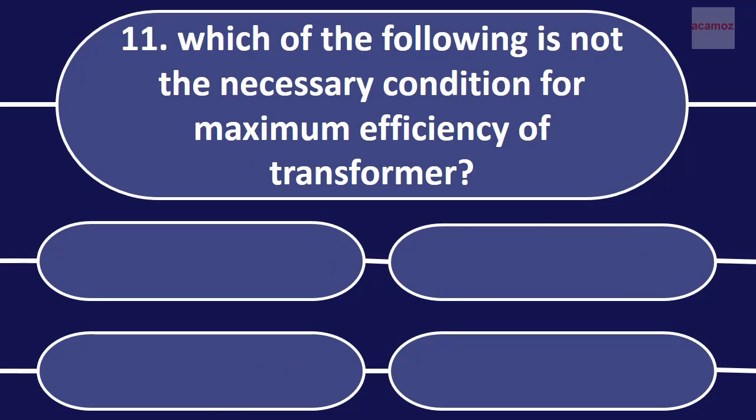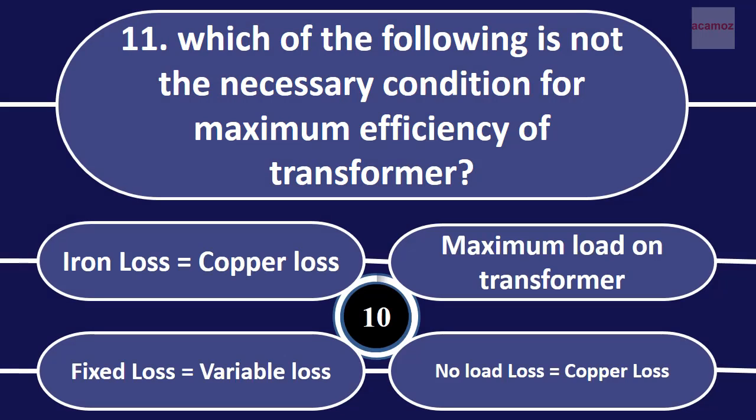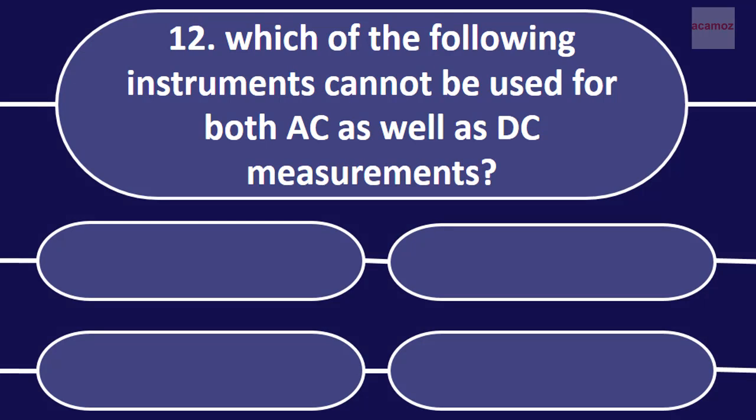Which of the following is not the necessary condition for maximum efficiency of transformer? Iron loss is equal to copper loss, maximum load on transformer, fixed loss equal to variable loss, no load loss equal to maximum load on transformer.